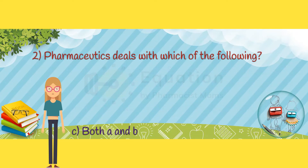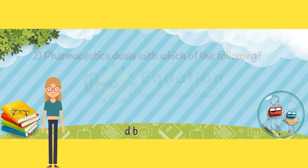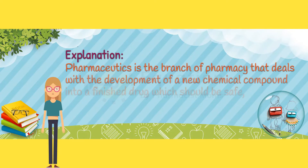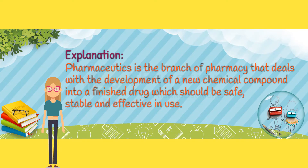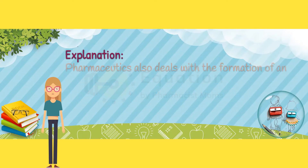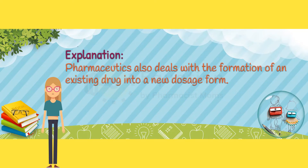The correct answer is Option C. Pharmaceutics is the branch of pharmacy that deals with the development of a new chemical compound into a finished drug, which should be safe, stable, and effective in use. Pharmaceutics also deals with the formation of an existing drug into a new dosage form.